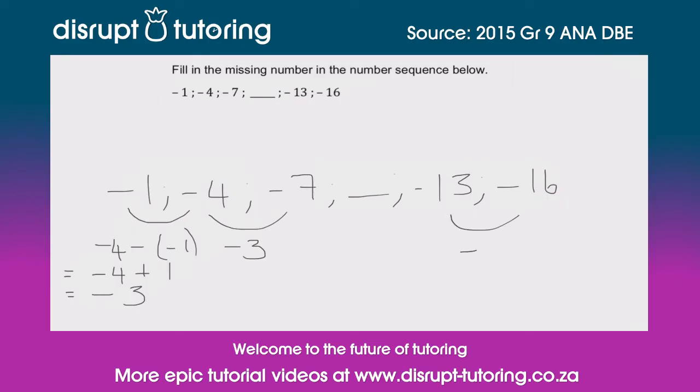And we can see that there's going to be a -3 there. So that means that there is a constant difference of -3 for all of these terms. And that would mean the constant difference, or the difference between this term over here and this term over here, is also going to be -3.